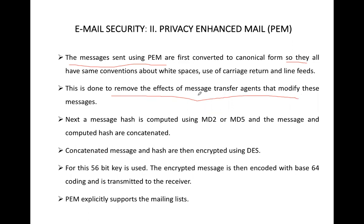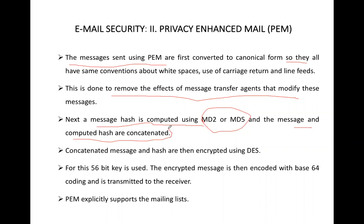In PEM, the message hash is computed using Message Digest 2 or 5. The message and the message hash are then concatenated. After concatenation, both are encrypted using Data Encryption Standard, DES, with a 56-bit key to encrypt the concatenated message and hash. PEM also explicitly supports mailing lists.